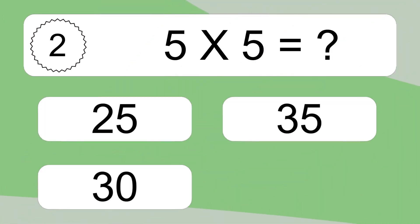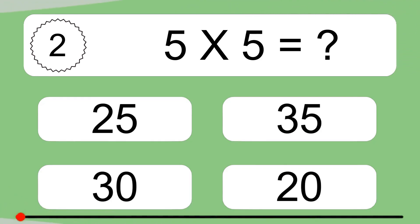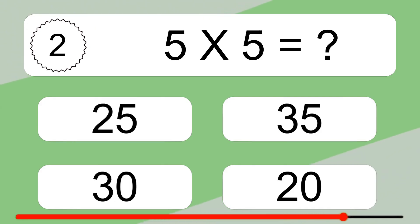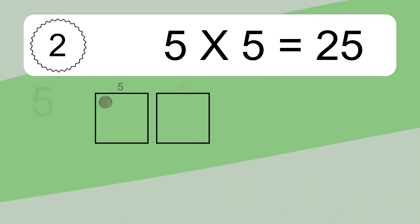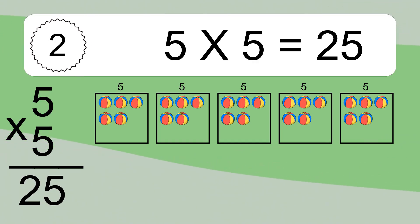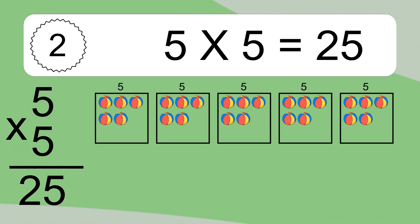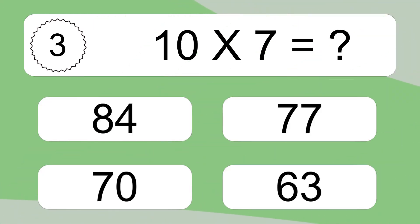5 times 5 equals what? 5 times 5 equals 25. We have 5 boxes, and each box has 5 colorful balls inside. If you count all the balls in all the boxes together, you will have 5 times 5 balls. This equals 25 balls.